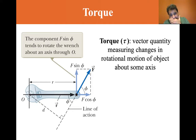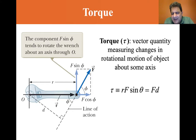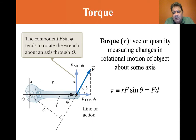Torque is a vector quantity measuring changes in rotational motion of an object about some axis. The torque is equal to R times F sine theta — it's R cross F, the R vector cross F. A cross B is A times B sine theta. So the torque is R cross F, giving R times F sine theta.